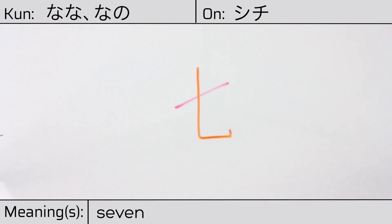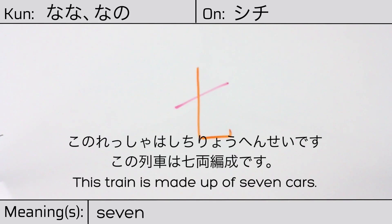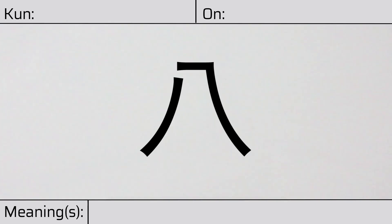Our example sentence is: This train is made up of seven cars.